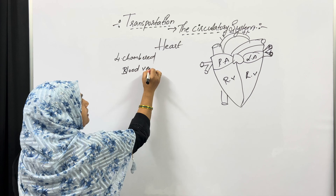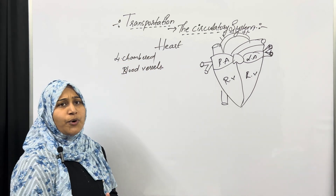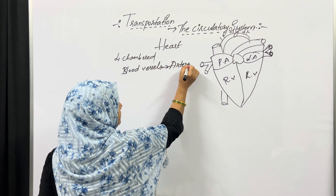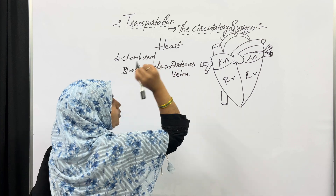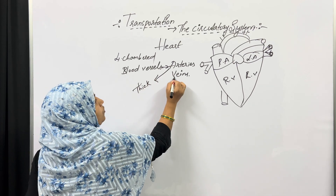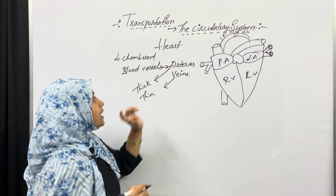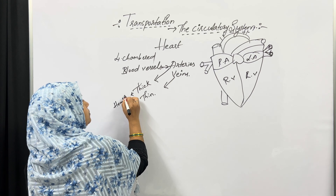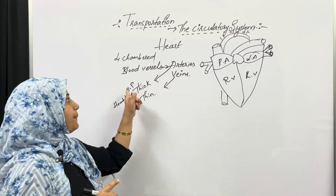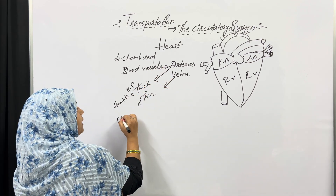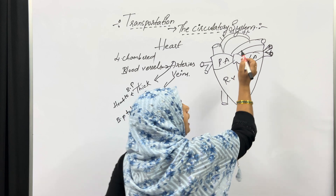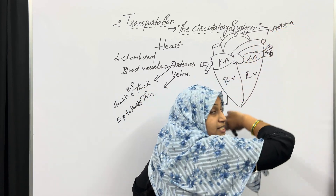There are two main types of blood vessels: arteries and veins. Arteries supply blood from the heart to the body parts. Veins carry blood from the body parts back to the heart. The largest artery is the aorta, which supplies blood to the head, neck, and the left arm.